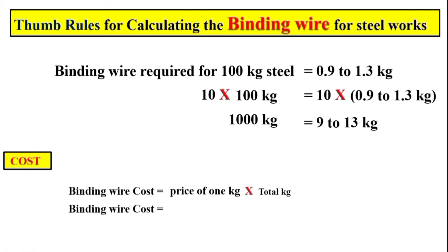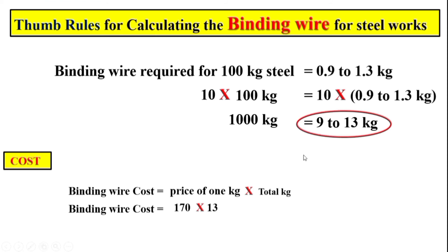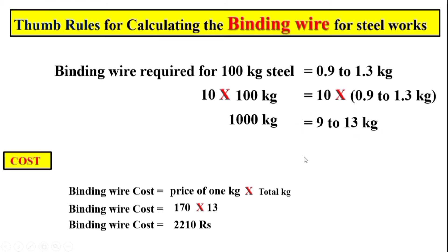Normally the price of 1 kg of binding wire in Pakistan is 170 rupees. So just multiply 170 by 13 to get the total cost of the binding wire for one ton of steel.